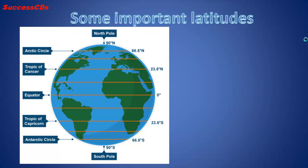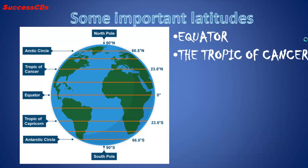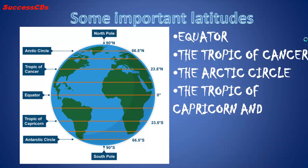Here are some important latitudes: the equator, the Tropic of Cancer, the Arctic Circle, the Tropic of Capricorn, and the Antarctic Circle.